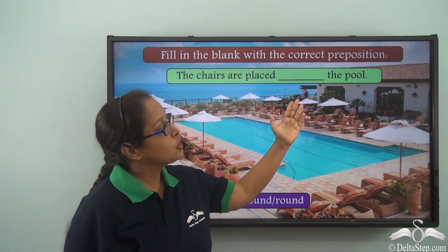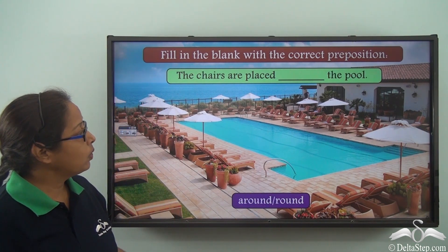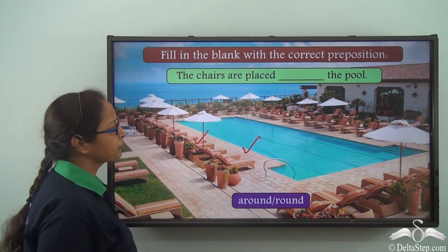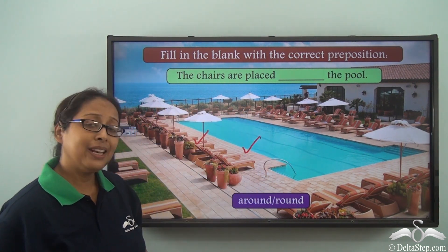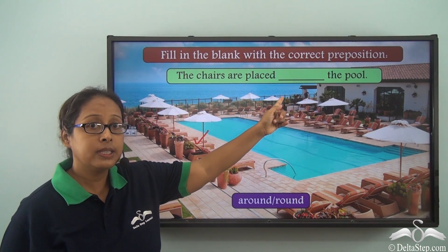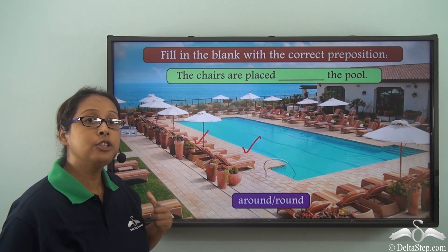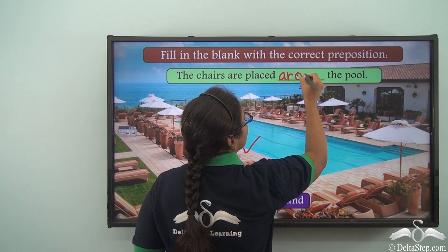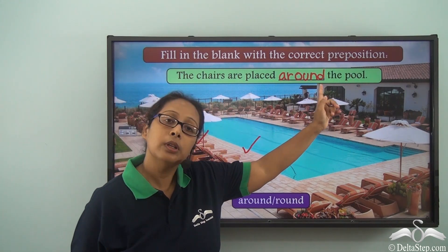The chairs are placed ___ the pool. The options are around and round. Looking at the picture, the chairs are on all sides of the pool. Can we say the chairs are placed round the pool? We cannot, because the chairs are not circling the pool in a circular motion. So the correct preposition is 'around': the chairs are placed around the pool.